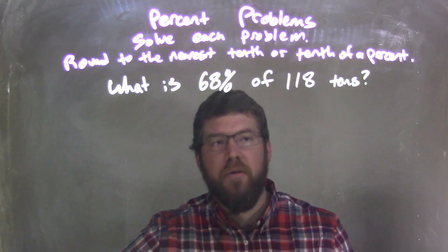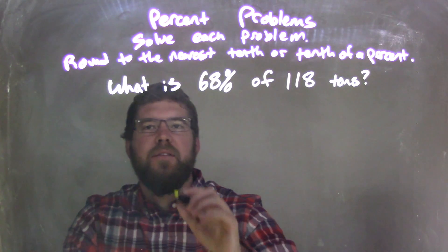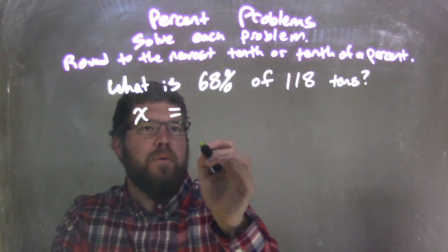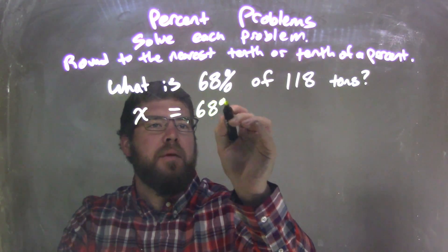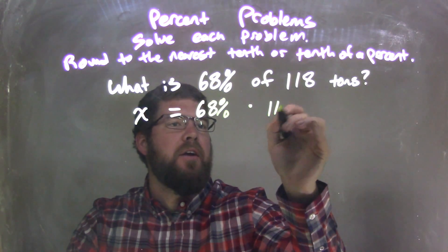What is 68% of 118 tons? Let's write this as an equation. What, or X, equals 68% of, or times, 118 tons.